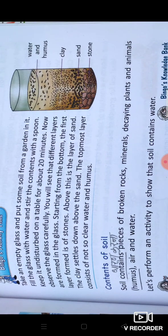In this activity, you will have an empty glass. Put the garden soil in it and mix with water. After that, shake it with a spoon and leave it for 20 minutes. After that, you will observe carefully and see different types of layers. From the bottom: first layer is stones, then sand and clay. On the top layer, you will not see clear water. In the top layer, humus is present.